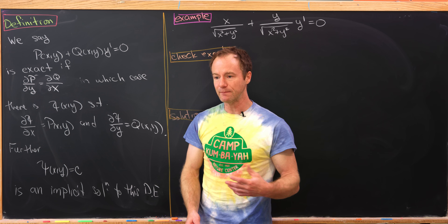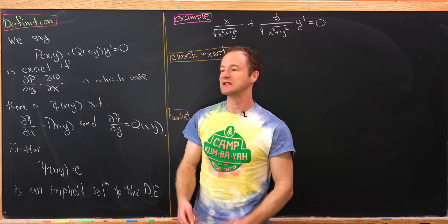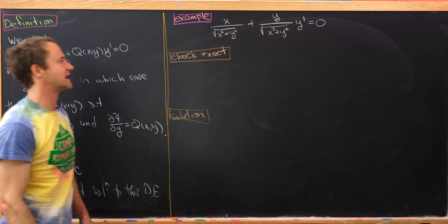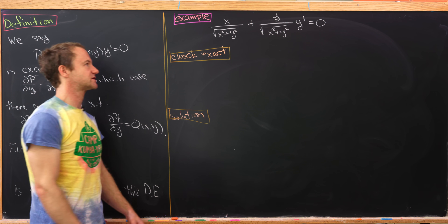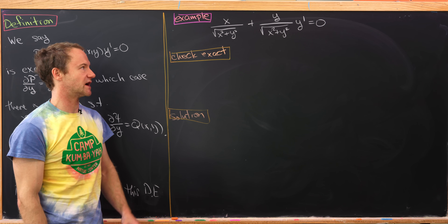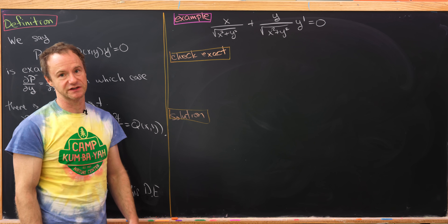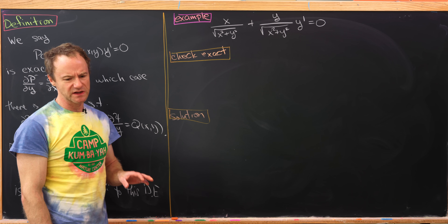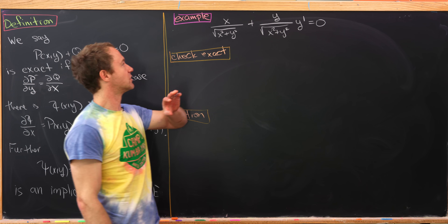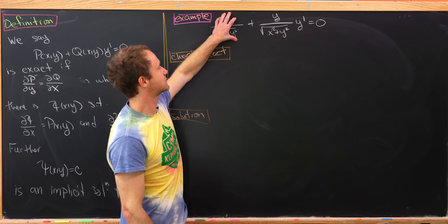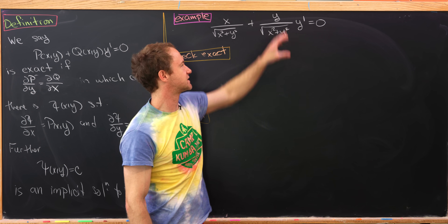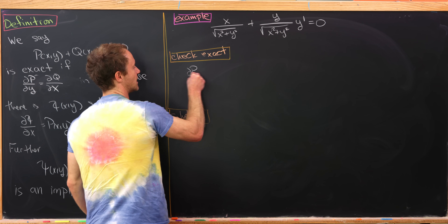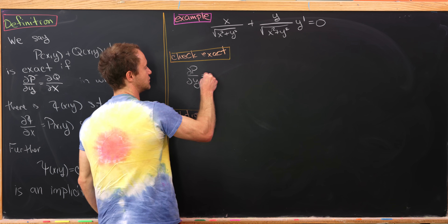That's an implicit solution because we may not easily be able to solve for y. So let's look at an example. We've got x over root x squared plus y squared, plus y over root x squared plus y squared times y prime, equals zero. Let's first check that this is exact. This will be our function p, whereas this will be our function q.